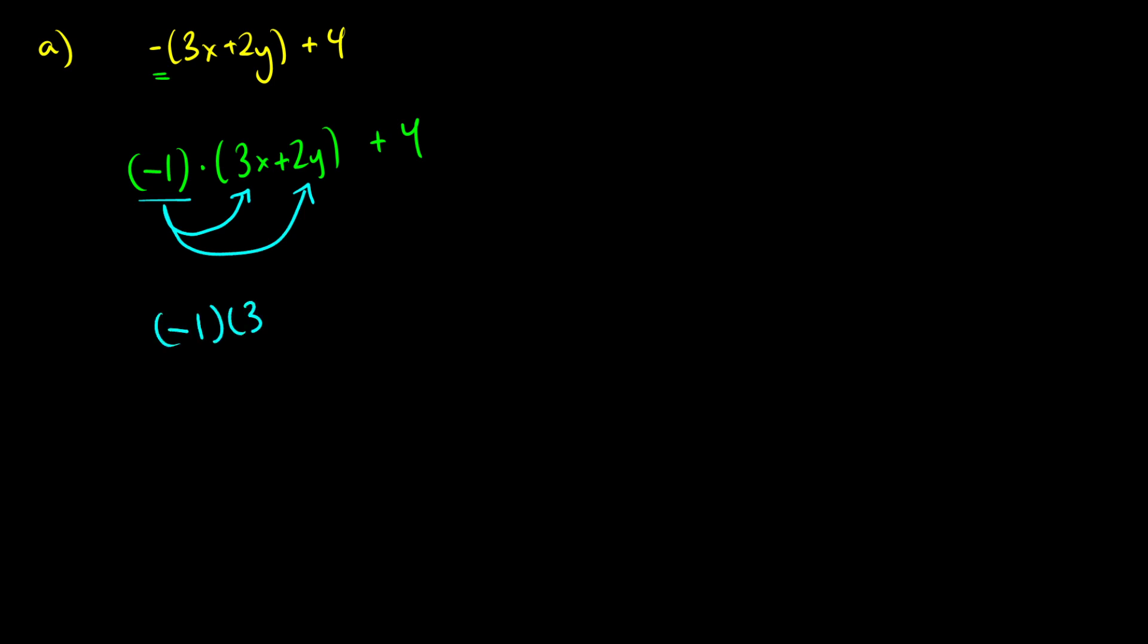So negative one times 3x plus negative one times 2y, and then we're going to add four after. When we multiply this, remember using the real number line example, if you have some number a and you multiply it by negative one, you're just flipping it around the real number to get that negative version of it.